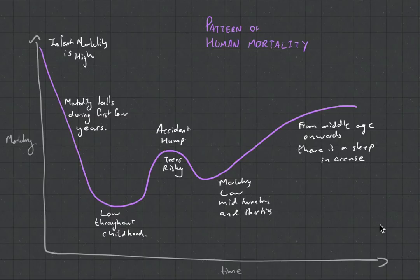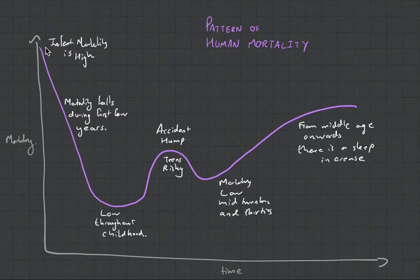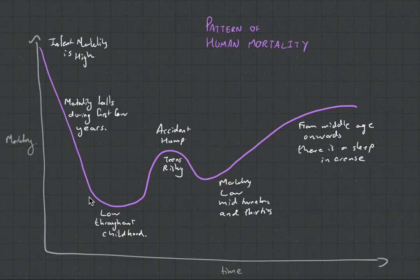This graph shows time against mortality — what is the mortality of a human as it ages. Mortality is very high for a newborn baby. As soon as you're born you are very vulnerable to disease and birth complications. There's quite a high chance you'll die as a baby. But as you get a little bit older, your body gets stronger, your immune system improves, and you become less dependent on your parents, so mortality decreases and is very low throughout childhood.